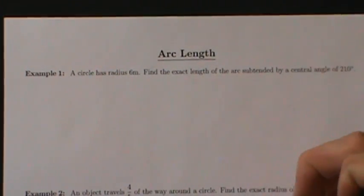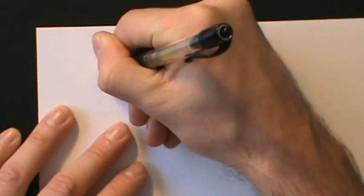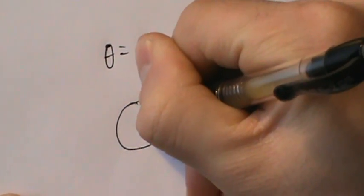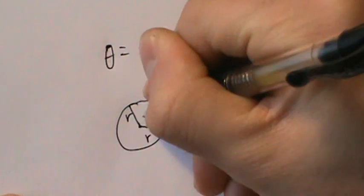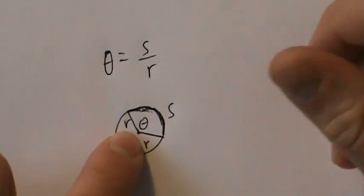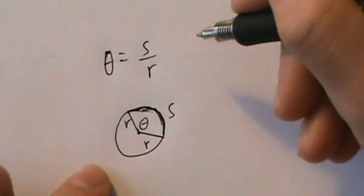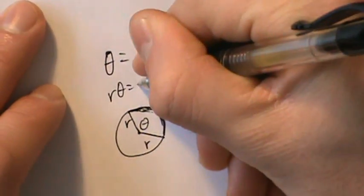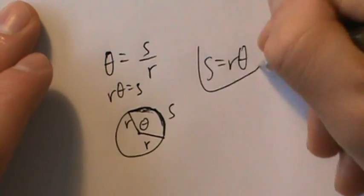Remember arc length — we talked about that a little bit when we defined radians. Let's briefly review that. Remember that formula: theta equals s over r. When we define what radians are, an angle in radians is given by the ratio of the arc length to the radius of a circle. So if we draw a picture: here's our circle with radius r, here's our angle theta, and s is the arc length that corresponds to that angle. Theta in radians is defined to be the arc length s divided by the radius r for a central angle theta. We can rewrite this: multiplying both sides by r gives r*theta = s, or s = r*theta. That's the arc length formula.